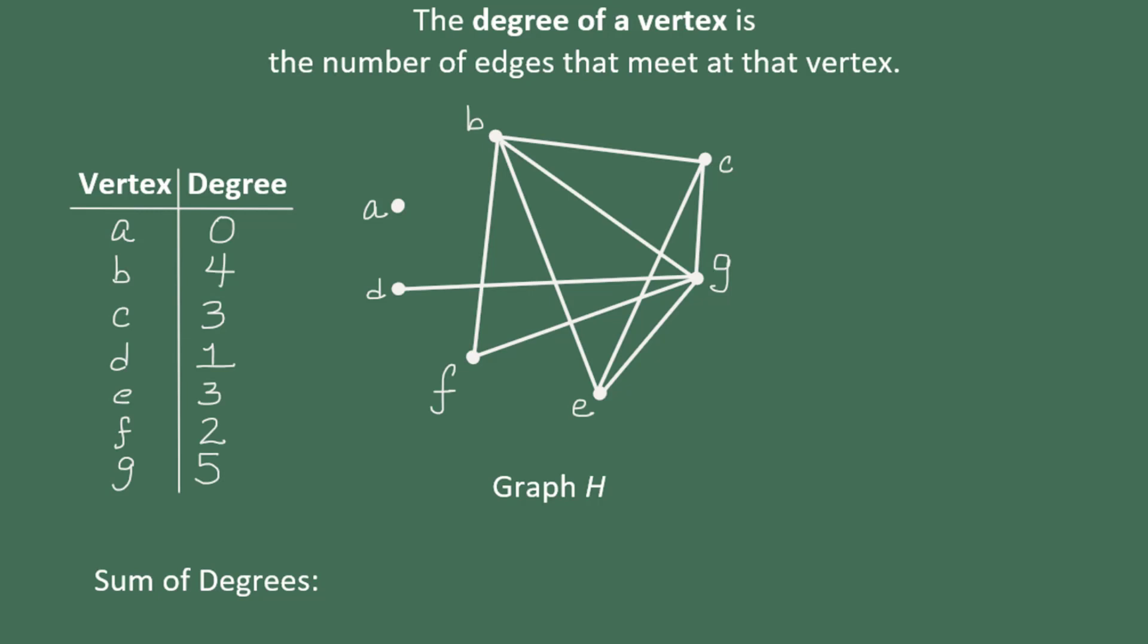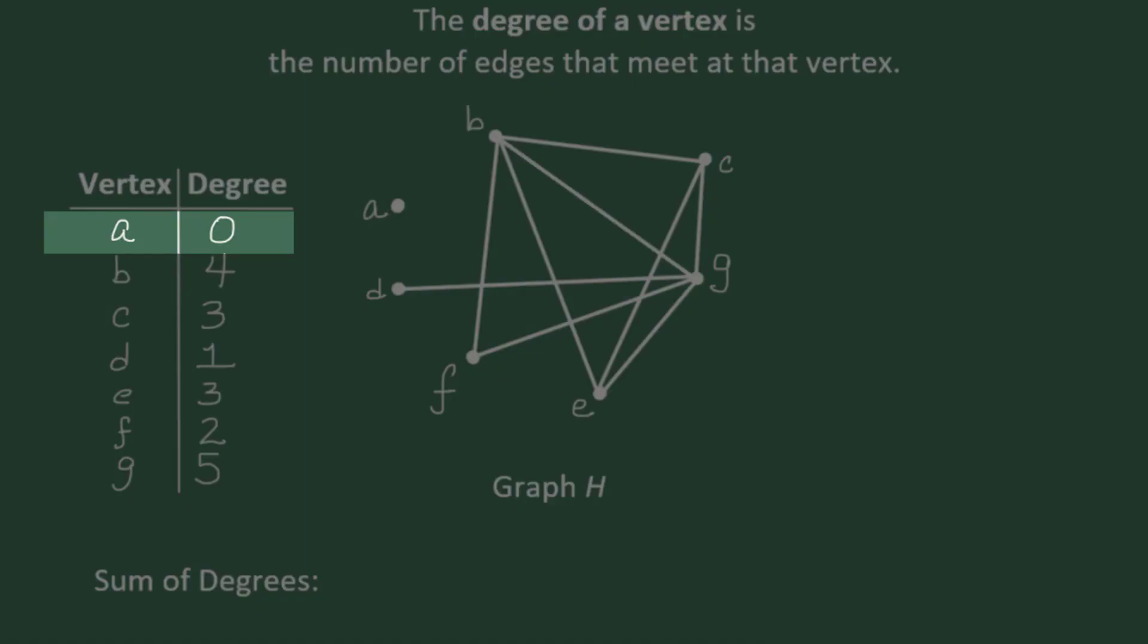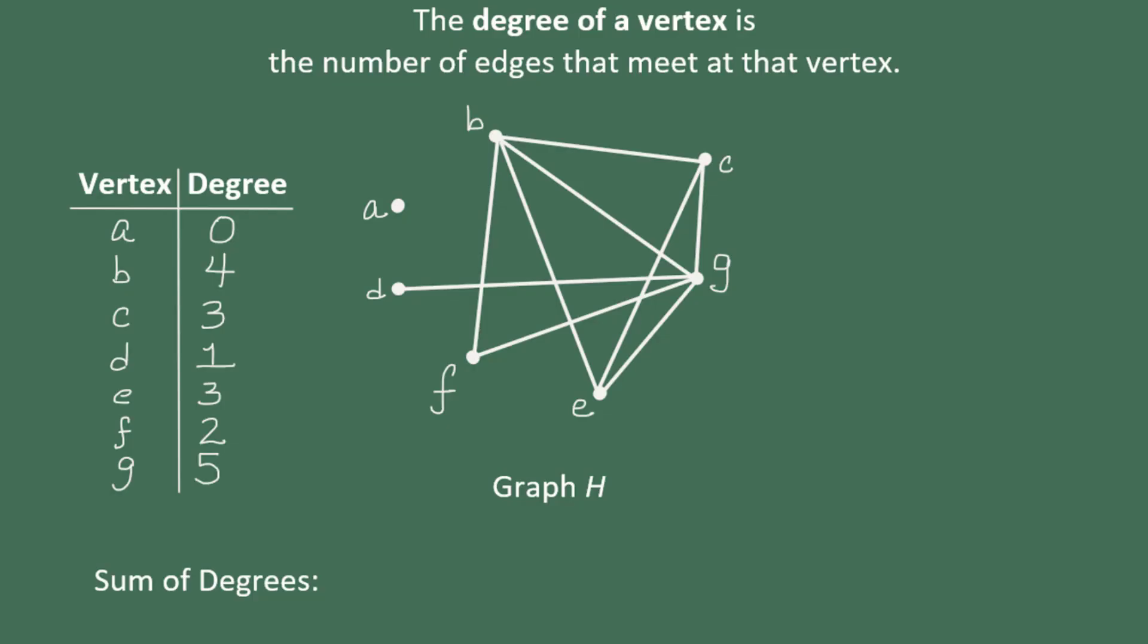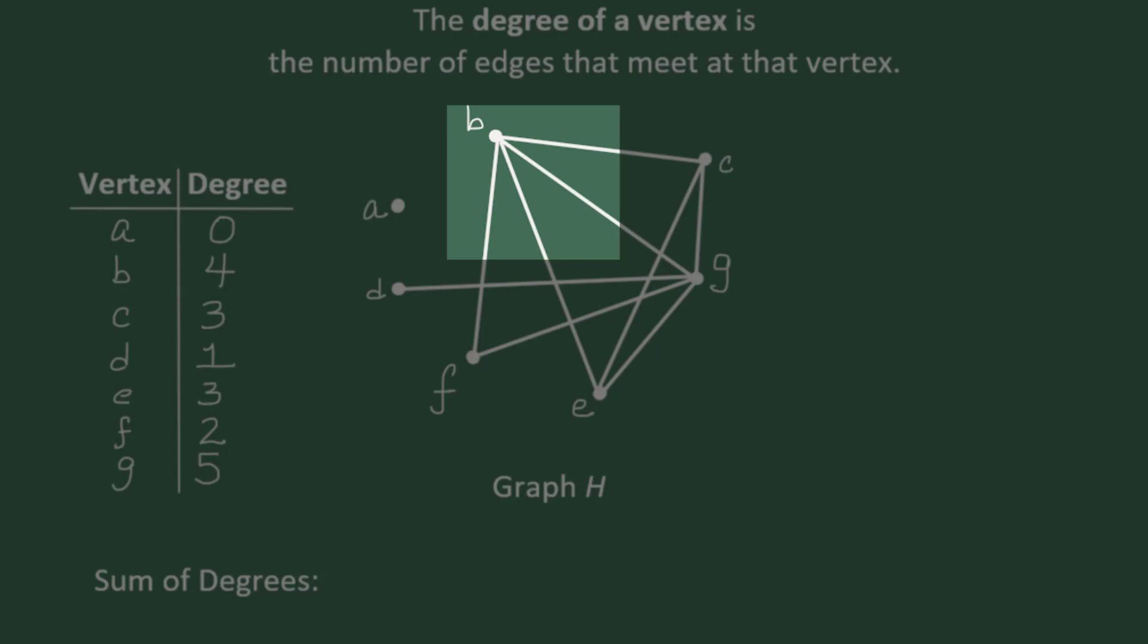In a previous video, we found the degree of each vertex of graph H here. For example, vertex A has a degree of zero because it doesn't touch any edges. And the degree of a vertex is exactly the number of edges that meet at that vertex. Vertex B, on the other hand, touches four edges, so it has a degree of four. Vertex C has a degree of three, and so on.